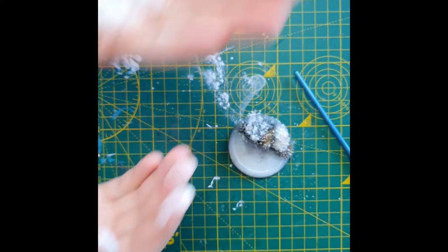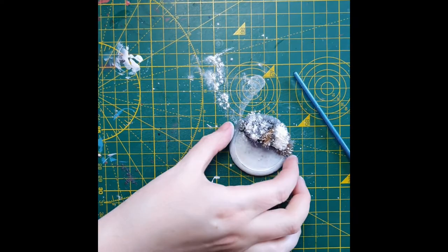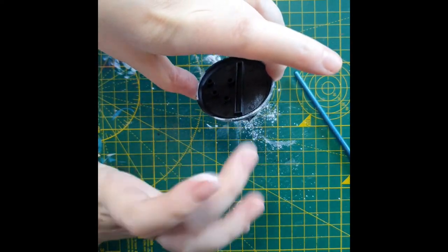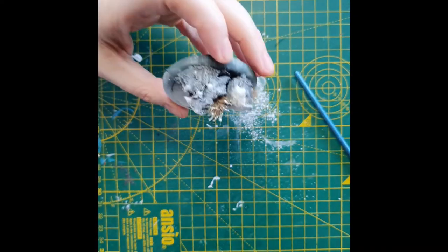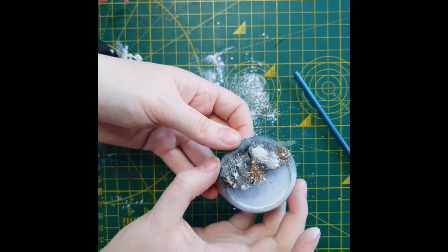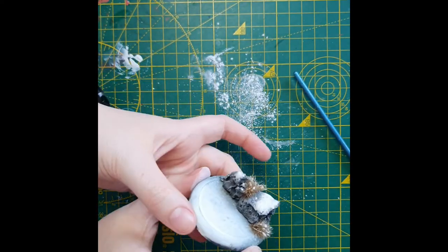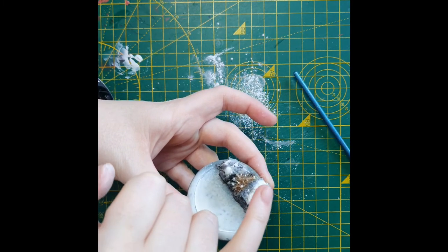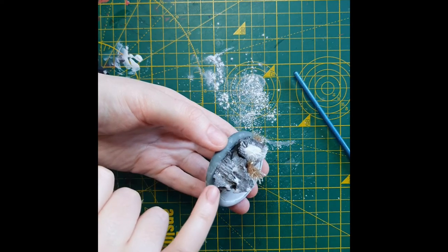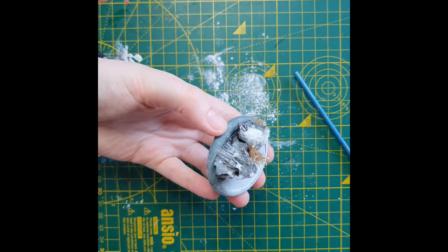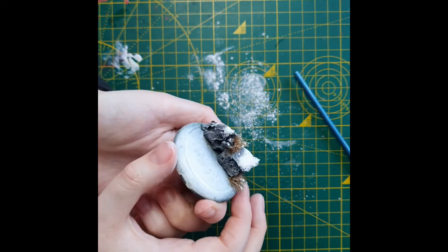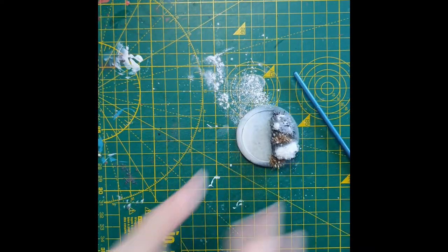So once you've got that everywhere you want it, you can just give it a little tap and blow on it a little bit to get rid of the excess, and then what you're left with is this fresh snow look round here. And then on the back here where the talc has set, it just makes the rock look a little bit frosty, and there you go.